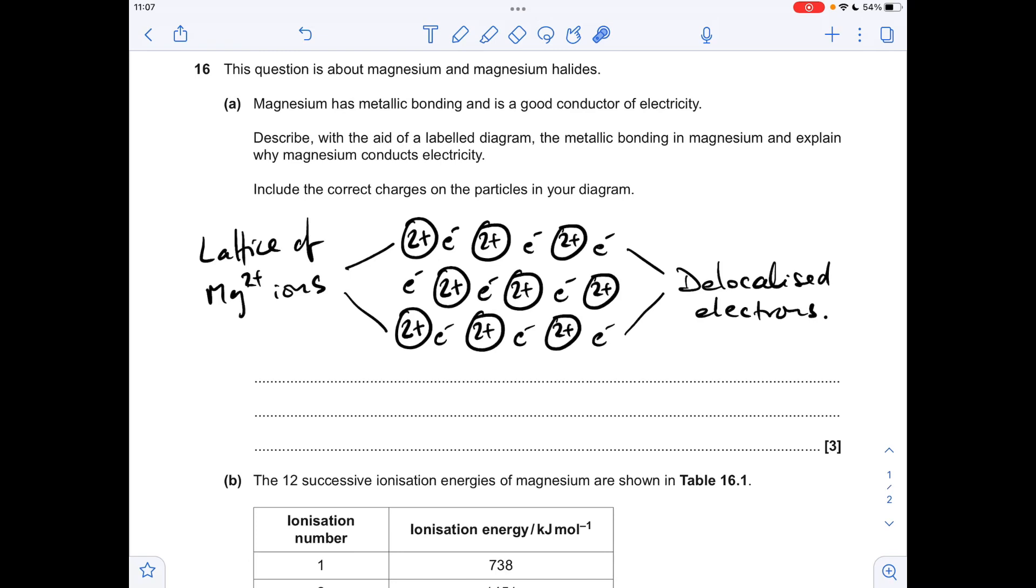With any metallic bonding diagram, I would always say to my students, do three rows of three and offset that middle row. So in the case of magnesium, you need a two plus charge.